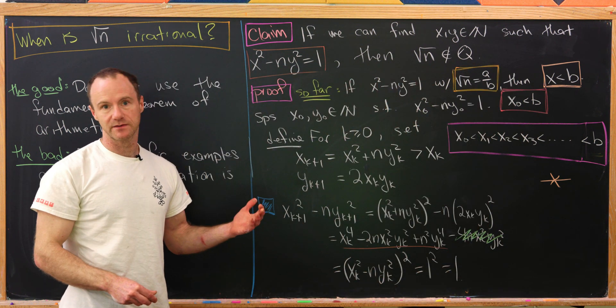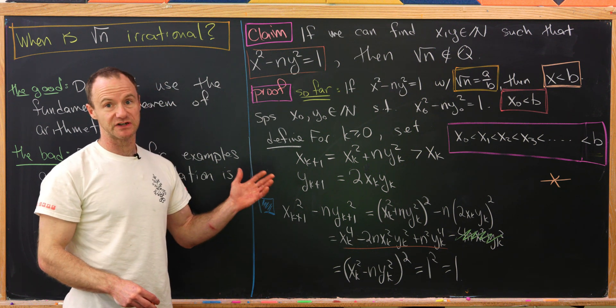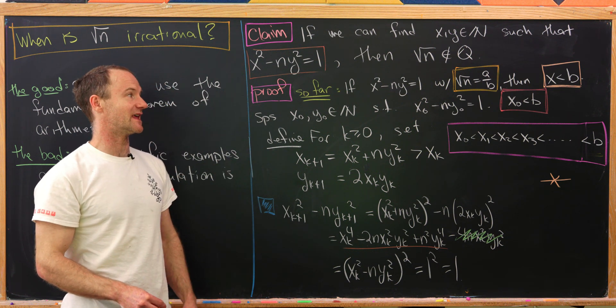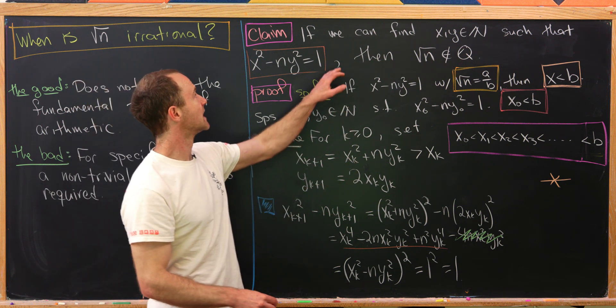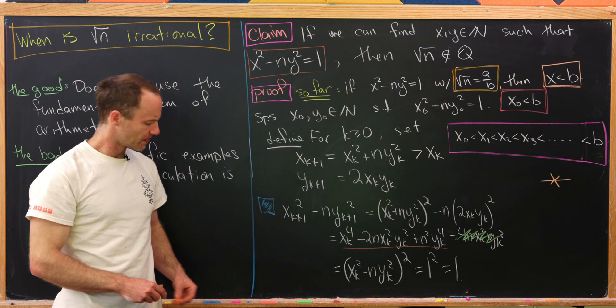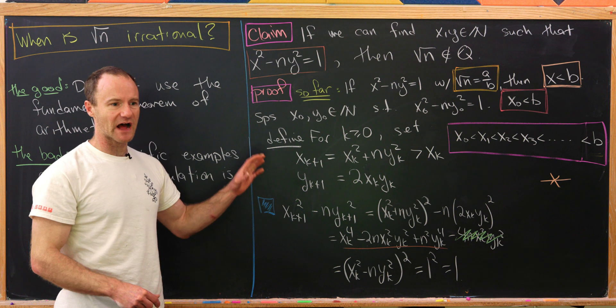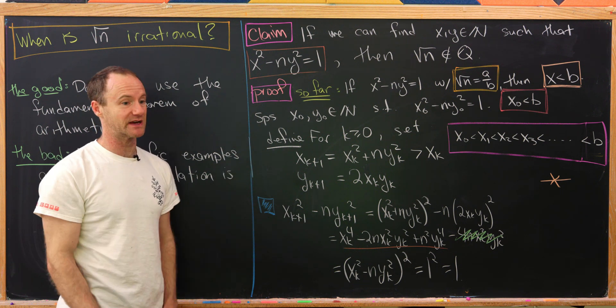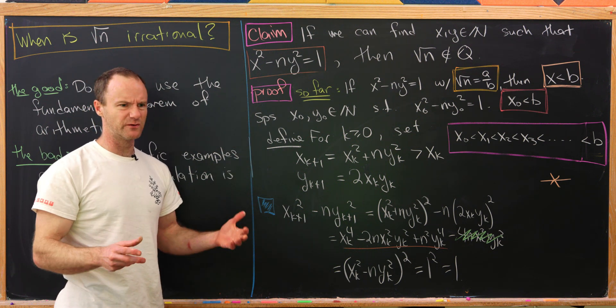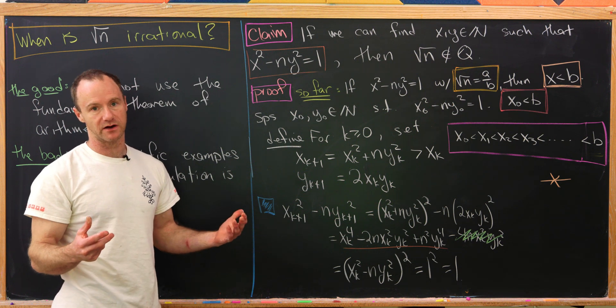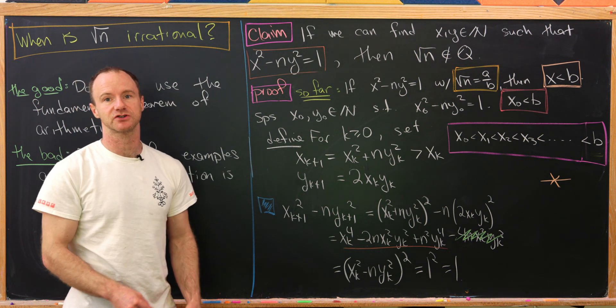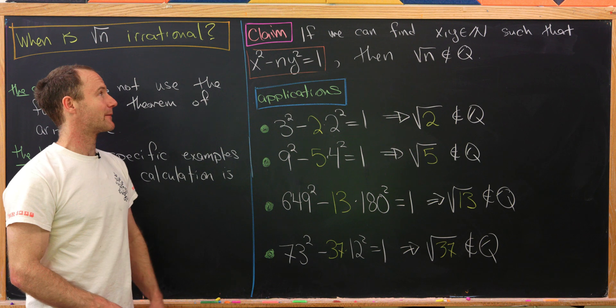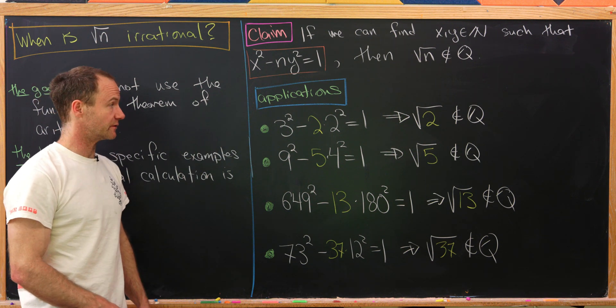So that assumption must be false. But if that assumption is false, then that means that the square root of n is irrational. And that proves this claim. So now that we've got this claim, let's look at some applications to prove numbers that are clearly irrational are, in fact, irrational.